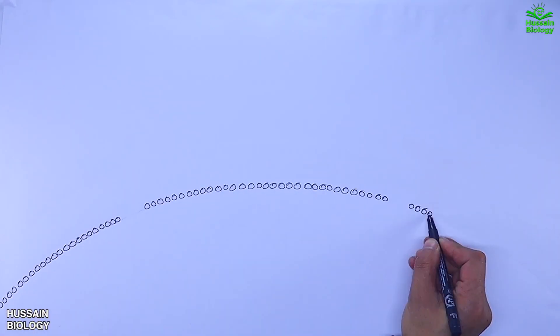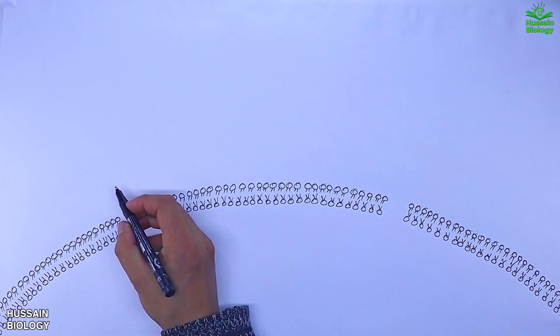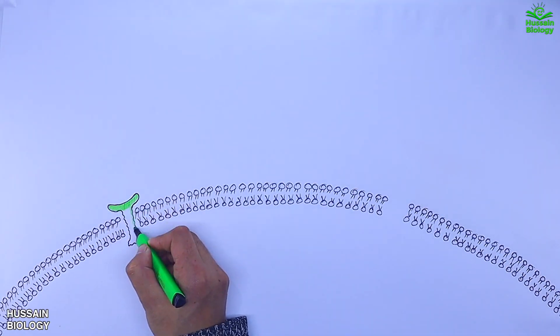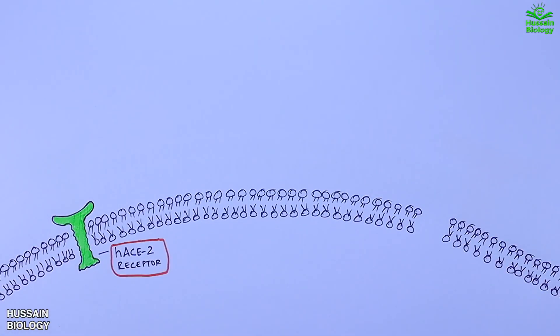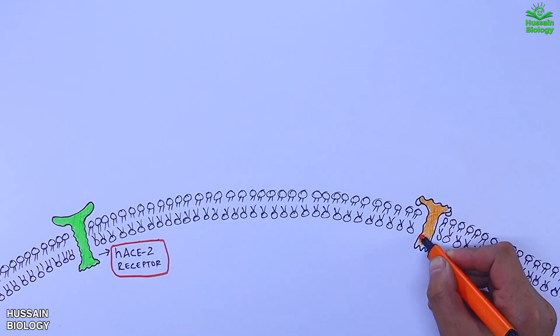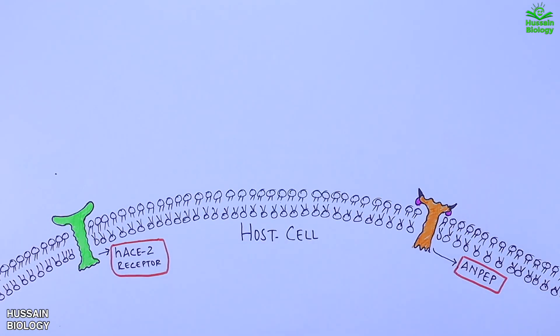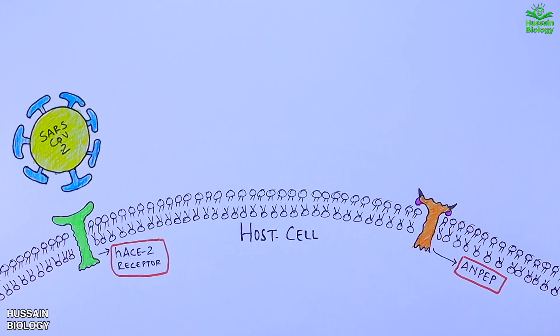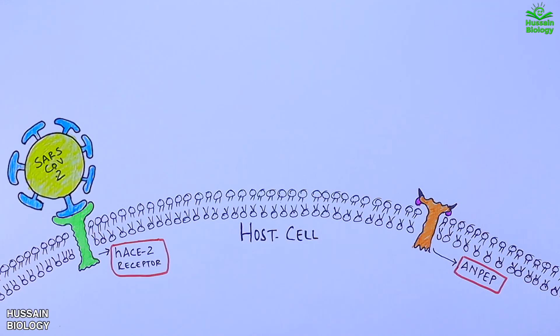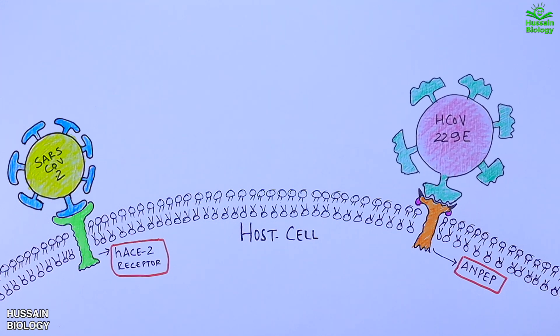Now let's get to the mechanism how this insertion takes place into the Omicron variant. Here in this diagram we have the human host cell. It expresses ACE2 receptor and also expresses the L-alanyl-aminopeptidase receptor referred as ANPEP. The ACE2 receptor receives the SARS-CoV-2 virus as shown in animation, whereas the ANPEP receptor receives the HCOV-229E virus.